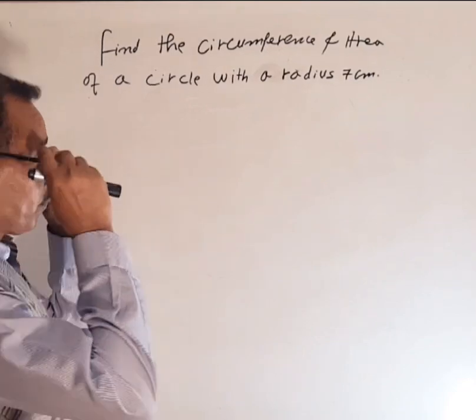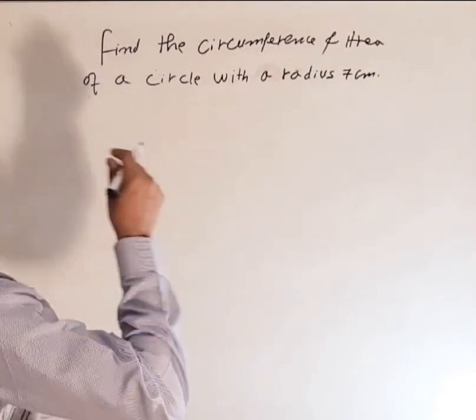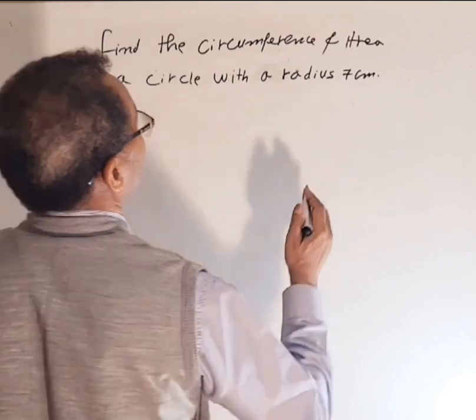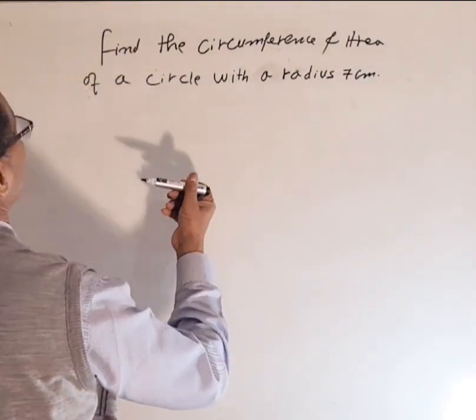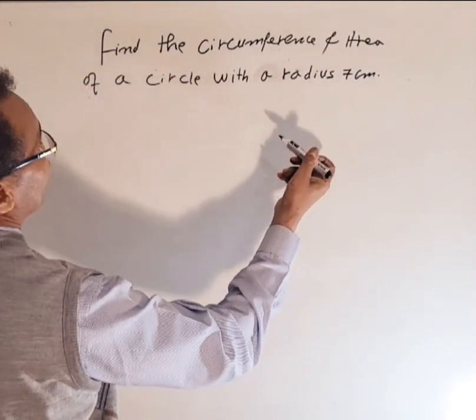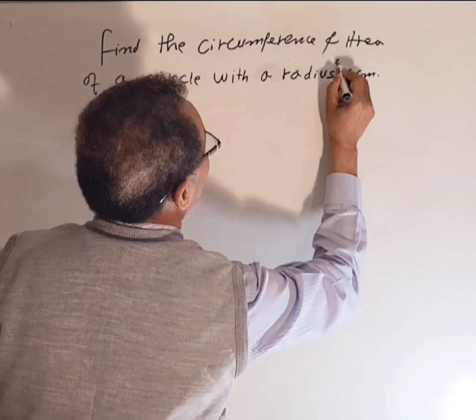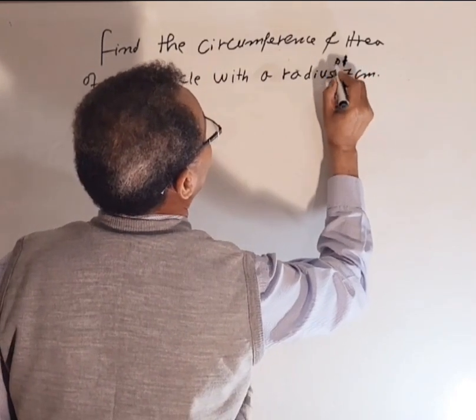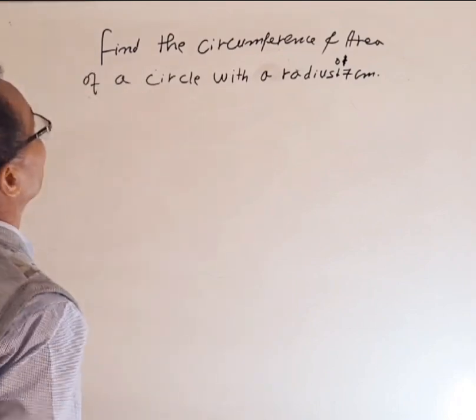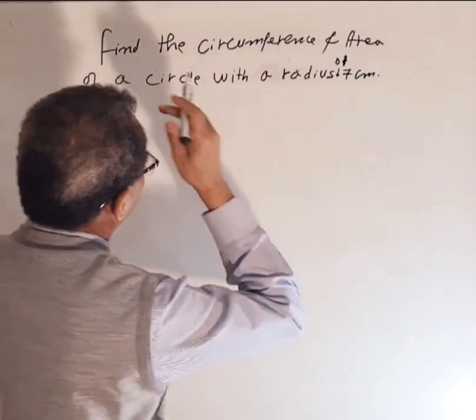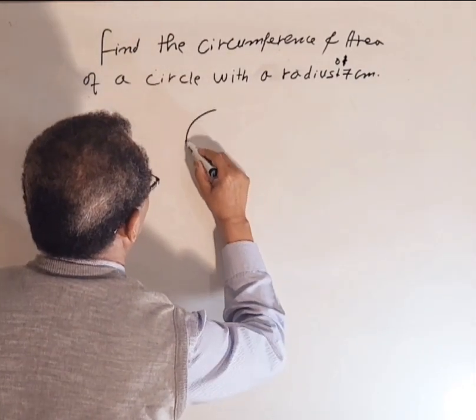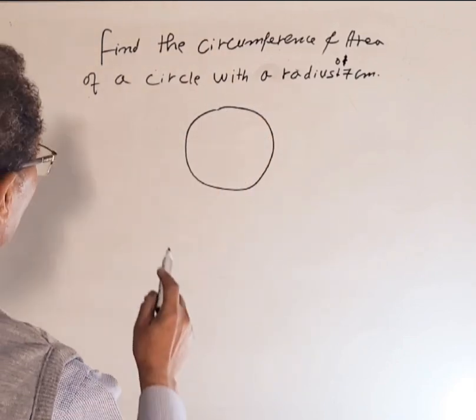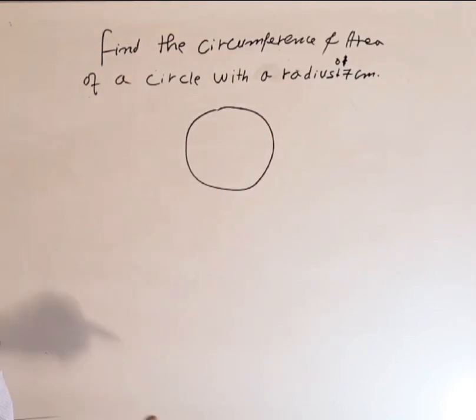Hi everyone, let's do this one. Find the circumference and area of a circle with a radius of seven centimeters. So let's draw the circle first. It's not a good one, but it will do the job.